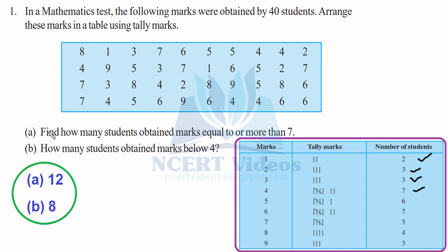Now for part A, find how many students obtained marks equal to or more than 7. We look at marks 7, 8, and 9 and count the number of students. Adding them: 5 plus 4 is 9, plus 3 is 12. So 12 students obtained marks equal to or more than 7.